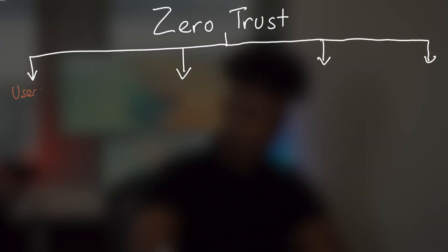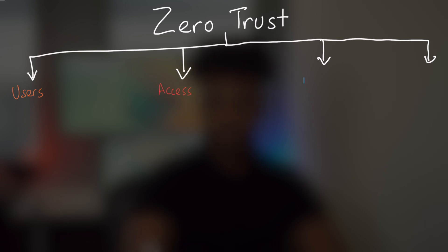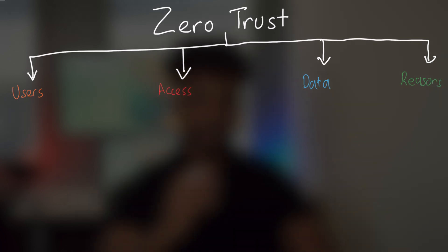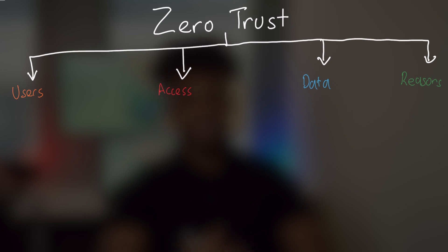First one is users. Two is access. Third is data and reasons. And the idea behind this is for the right users to get access to the right data for the right reasons. So let's start with some security controls with users.